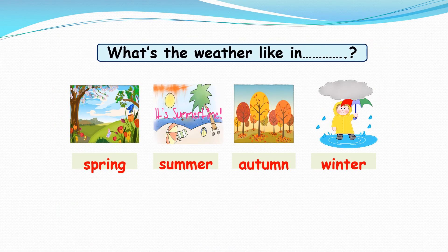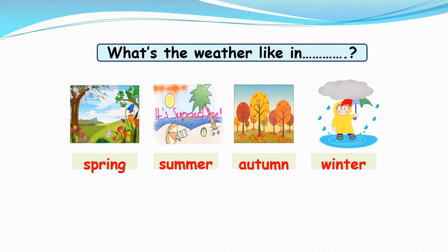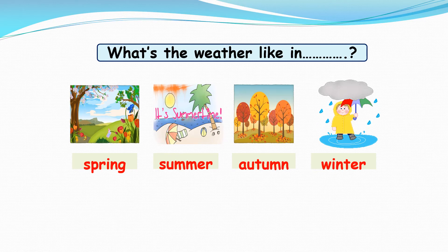What is the weather like in spring? It's rainy, and it's cooler than summer. What is the weather like in summer? It's hot and sunny. What is the weather like in autumn? It's windy and cloudy. What is the weather like in winter? It's cloudy and rainy.